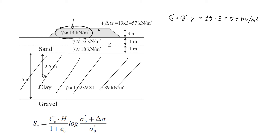To estimate the settlement we're going to use this formula. There are a few formulas we can use, and this one is the most appropriate because it uses the compression index, which has already been provided. The compression index of this clay is 0.68.